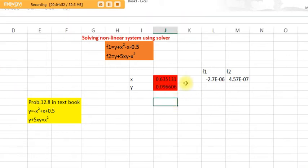x is 0.63, y is 0.09. So these are the roots of the system of nonlinear equations. You had two equations, two unknowns, and these are the answers. I hope it's clear.